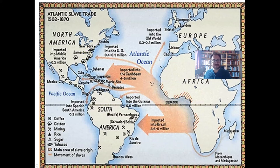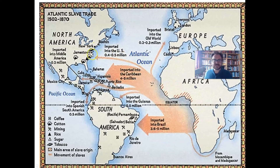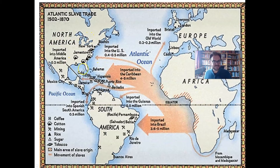As horrific as the conditions were in North America — and we will examine those throughout this course — they were not killing enslaved people at the same rate as the rest of the Americas. That's a key distinction. Half a million Africans came over as first-generation slaves, but in North America they were largely able to survive.